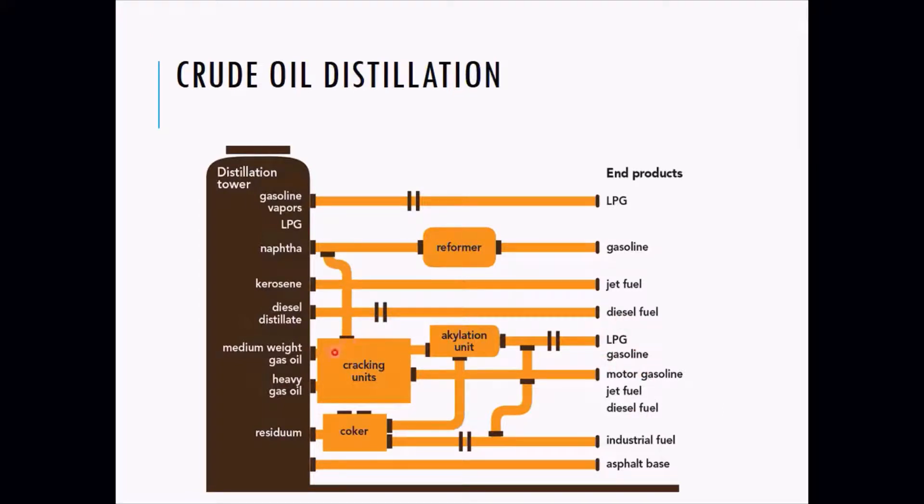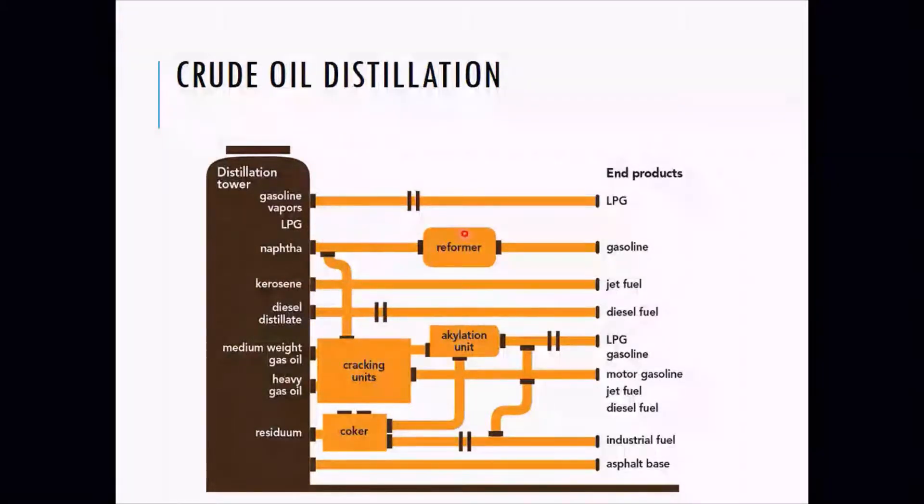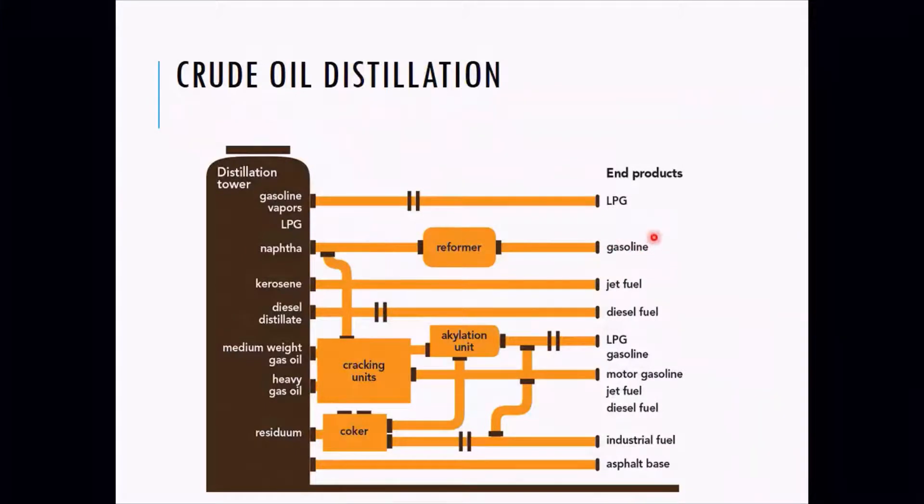If you want to get LPG and gasoline, that product is subjected to a reformer. We have naphtha, and after naphtha is subjected to reformer we get gasoline. From the gas oil you still refine it and you get again LPG and gasoline. When the crude oil is subjected to temperatures, we get LPG at the lower temperatures and we get naphtha and gasoline.